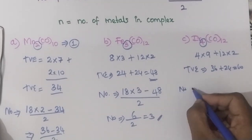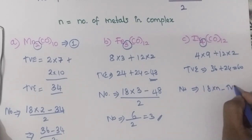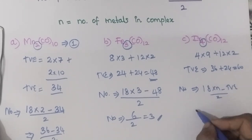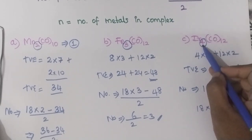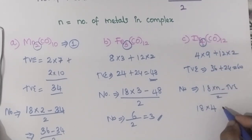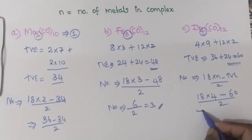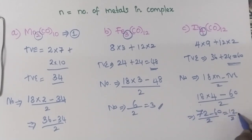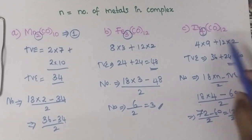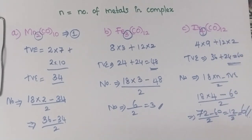Number of metal-metal bonds = (18 × N − TVE) / 2. So: (18 × 4 − 60) / 2 = (72 − 60) / 2 = 12 / 2 = 6. Ir₄CO₁₂ has 6 metal-metal bonds. This question on Ir₄CO₁₂ has been asked in previous year exams — I think 3 to 4 times they have asked the same complex. It is a very important example.